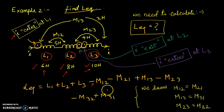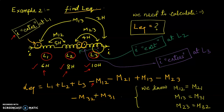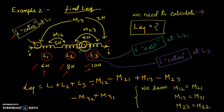Now let us see the mutual of inductor 2 because of 3, that is M23 or M32. At the dot of inductor 2, current is leaving — it exits. And at the dot of inductor 3, the current enters. So there is series opposition, and therefore the sign is minus for M23.